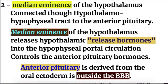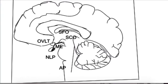Number two is the median eminence of the hypothalamus. This produces the releasing hormones of the anterior pituitary that act on the anterior pituitary to control its hormones. The anterior pituitary is outside the blood-brain barrier and is derived from the oral ectoderm, not from the neuroectoderm. The anterior pituitary is connected to the hypothalamus by hypothalamo-hypophysial portal blood vessels, while the posterior pituitary is connected through the hypothalamo-hypophysial nervous tract.